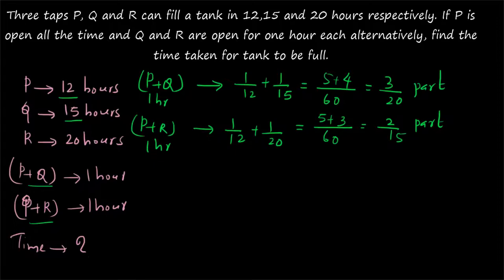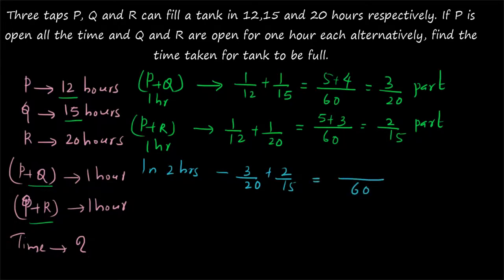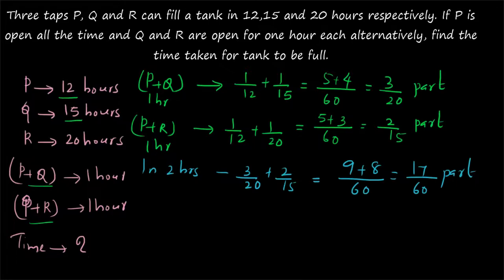In every two hours, the part filled is 3/20 plus 2/15. The LCM of 20 and 15 is 60, so 3 times 3 is 9 and 2 times 4 is 8, giving 9 plus 8 equals 17. So 17/60 part will be filled in every two hours. Now by trial and error: 17 times 3 is 51, so 17/60 times 3 is 51/60 — less than 1. But 17 times 4 exceeds 60, so four cycles won't work.